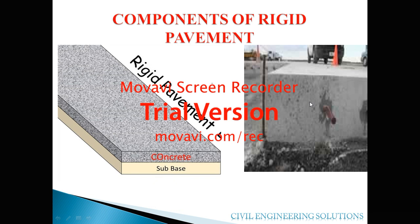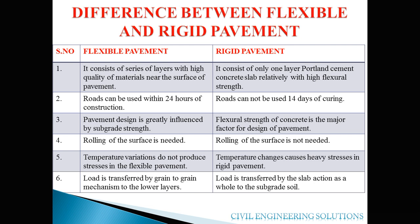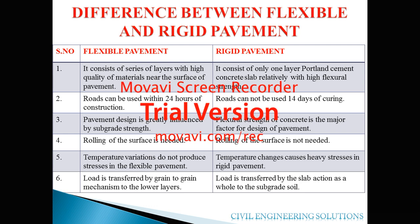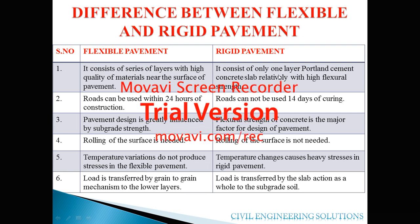Now we will discuss the differences between flexible pavement and rigid pavement. Flexible pavement consists of a series of layers with high-quality materials near the surface, as it is a multi-layer system with different materials used in different layers as per design. Rigid pavement, on the other hand, consists of only one or two layers in which a Portland cement concrete slab is used, which has high flexural strength.